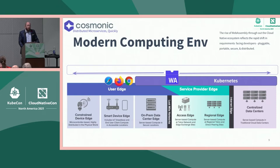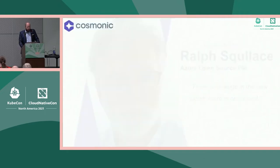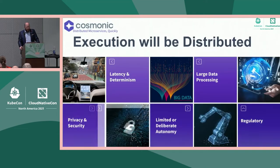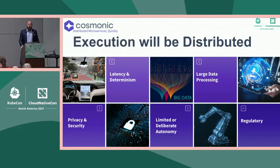What are the additional problems with today's technology? There is no edge in the new cloud. There are compelling reasons for where compute will live in the future. Will it all live centrally in the public cloud, with everything on the right being dumb and making API calls? I would argue absolutely not, for at least five reasons: latency and deterministic reasons, privacy and security reasons, times when you want limited or deliberate autonomy, data locality, and regulatory reasons.